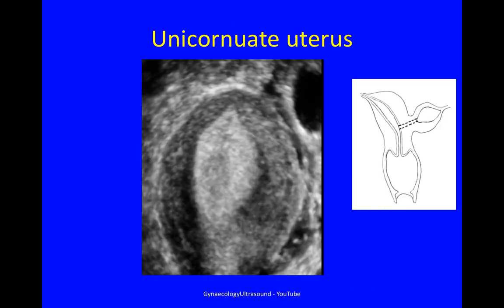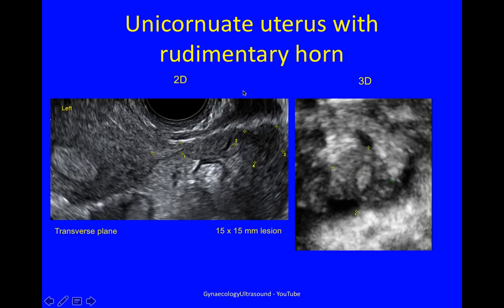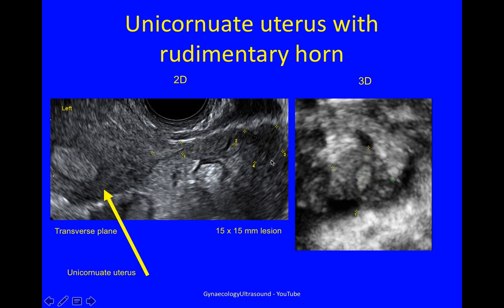When you render that on 3D, you can clearly see one cavity going up to a single interstitial portion of the fallopian tube. When you see a unicornuate uterus, do look for a rudimentary horn. Here we could see a unicornuate uterus with a connection to a 15 by 15 millimetre lesion which on 3D clearly had a little bit of endometrium in it — so this was a non-communicating rudimentary horn with a unicornuate uterus.